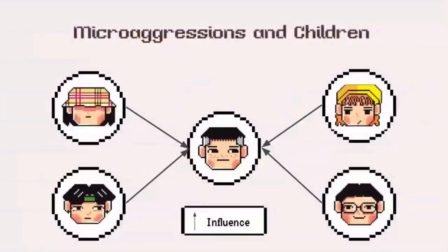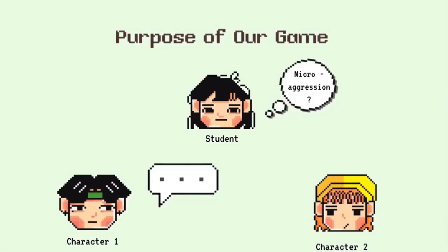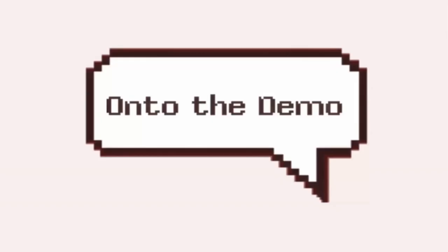Children are quite influenced by behaviors shown by parents, close family, and peers. Due to this, they may unintentionally learn microaggressive behaviors, being too young to differentiate between right and wrong, and continue to exhibit these behaviors as they grow older. Our game, Spotting a Microaggression, aims to show children scenarios in which a comment or gesture can make someone feel hurt by attacking parts of their identity. We believe it is easier for children to learn from situational stories instead of lectures, and Scratch is the best medium to convey these stories. Now let's start our demo!